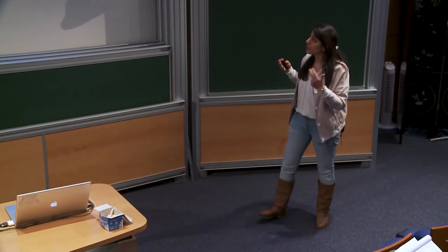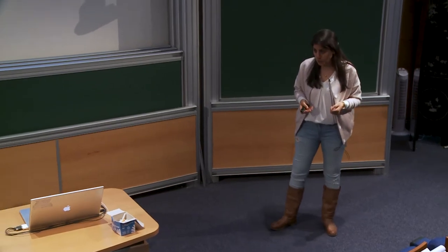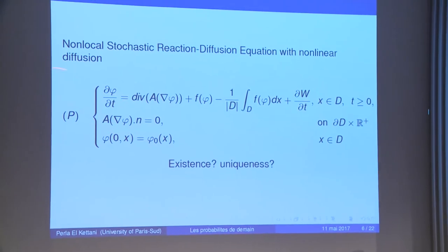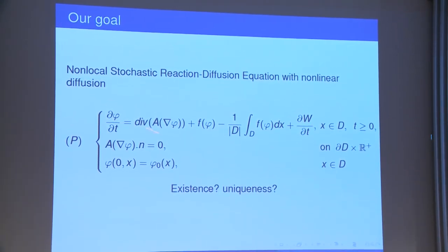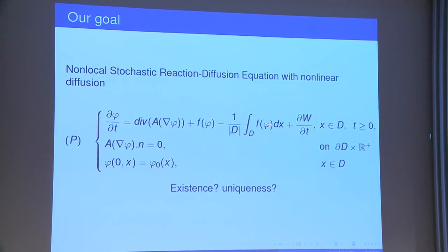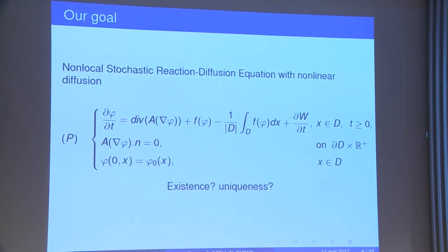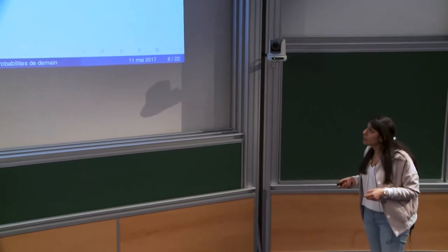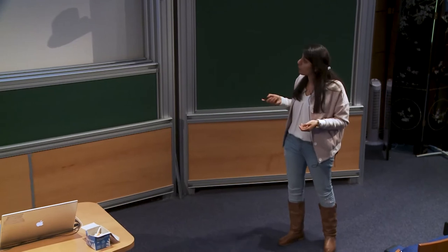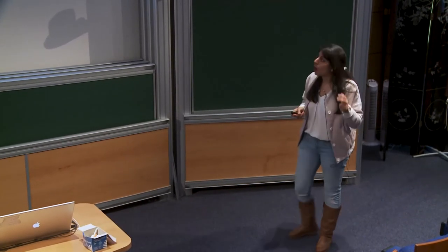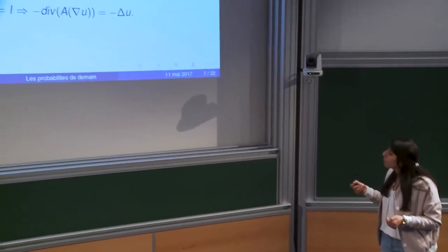Our goal is to study the non-local stochastic reaction diffusion equation with nonlinear diffusion. We introduce the problem: partial derivative of phi over partial derivative of t equals divergence of A of gradient phi (the nonlinear diffusion term), plus f(phi) (the reaction term, more general but here we consider the Allen-Kahn case for simplicity), the non-local term, the stochastic term, some boundary conditions, and initial condition phi_0. D is an open bounded set of R^n with sufficiently smooth boundary. A is Lipschitz continuous from R^n to R^n and A is coercive.